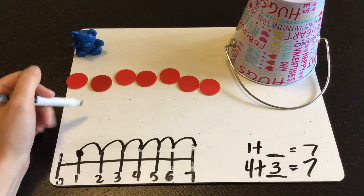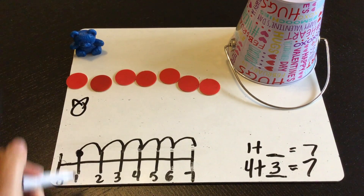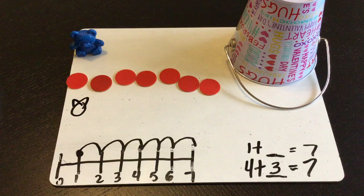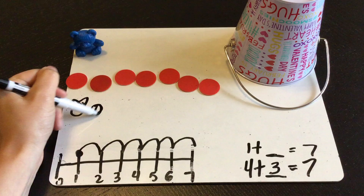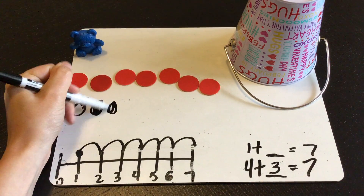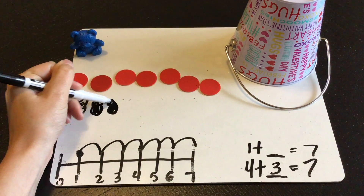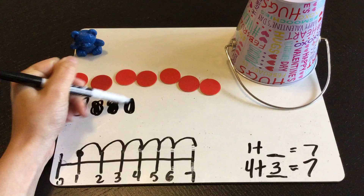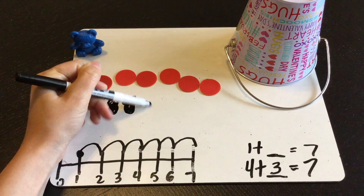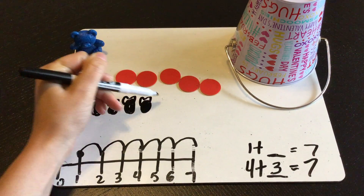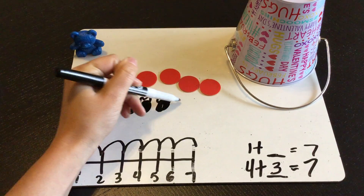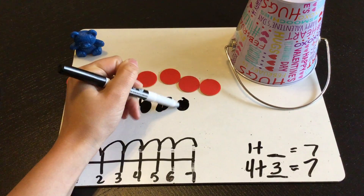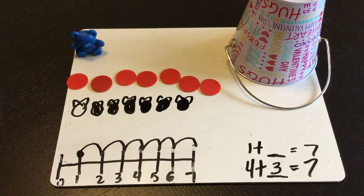Let's draw our bear. We've got one outside bear. Now we have to draw the rest as inside bears: one, two, three, four, five, six, seven.